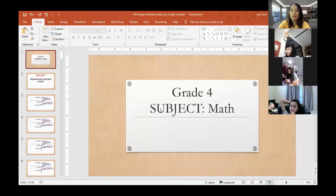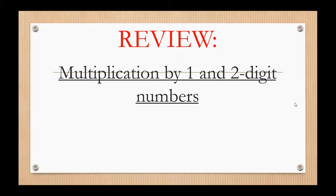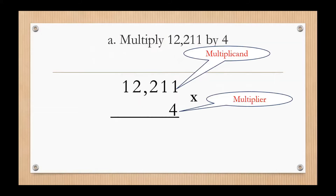Let's start by having a review. We have multiplication by one and two digit numbers. We have an example here: multiply 12,211 by 4. So 12,211 is the multiplicand, and 4 is what we call the multiplier. The first number we always write is the multiplicand, and the number after the symbol is the multiplier. When solving, we start from right going to the left.